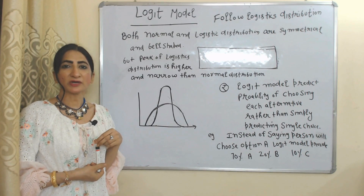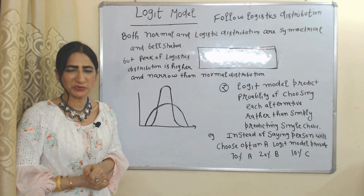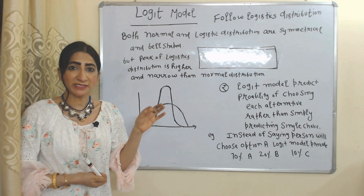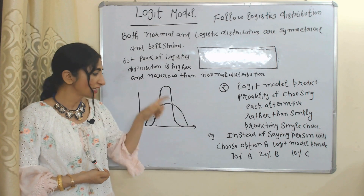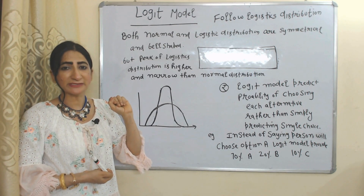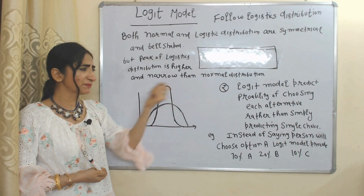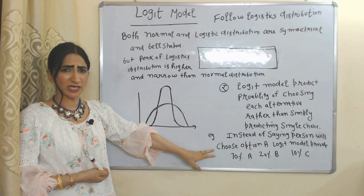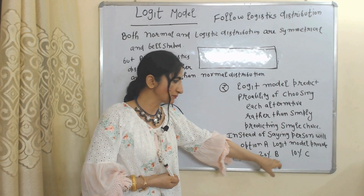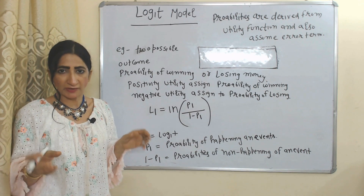The first discrete choice model is the logit model. The logit model follows logistic distribution. The logit model predicts the probability of choosing each alternative rather than simply predicting a single choice. For example, instead of saying a person will choose option A, the logit model provides a 70% probability of choosing A, 20% probability of choosing B, and 10% probability of choosing C.